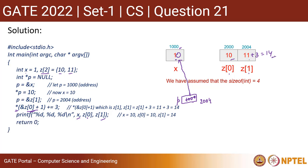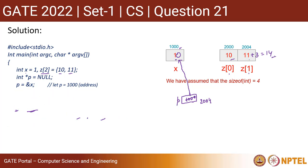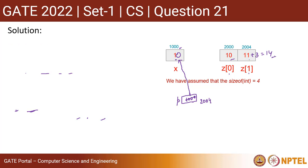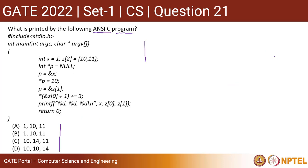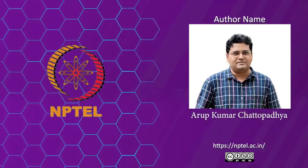Now we are printing the values. The value of x is 10. The value of z[0] remained unchanged at 10. z[1] has become 14. So your answer will be 10, 10, and 14. Going back to the options, that is option D, which is the correct answer. Thanks for watching. Bye.